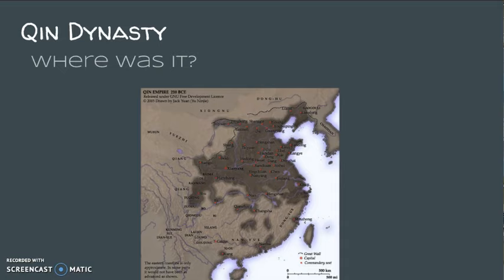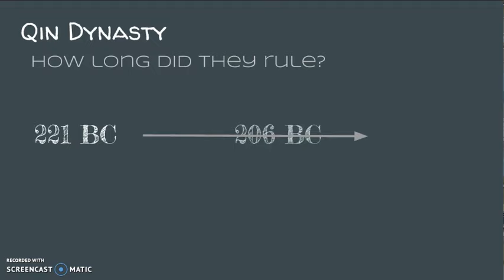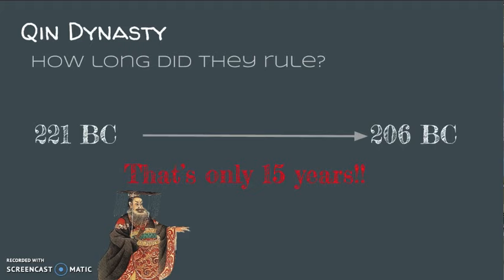As per usual, the Qin Dynasty is in China, and notice it's getting larger. You should also notice that now the dynasty has expanded to encompass the Yellow River and the Changjiang River. How long do they rule? Incidentally, we are now studying the shortest ruling dynasty in all of ancient China. This lasted only 15 years.